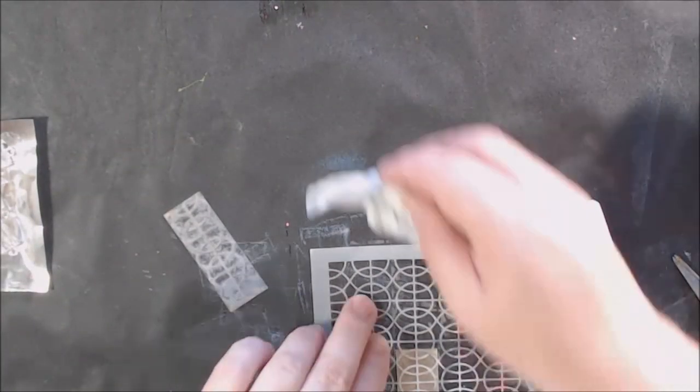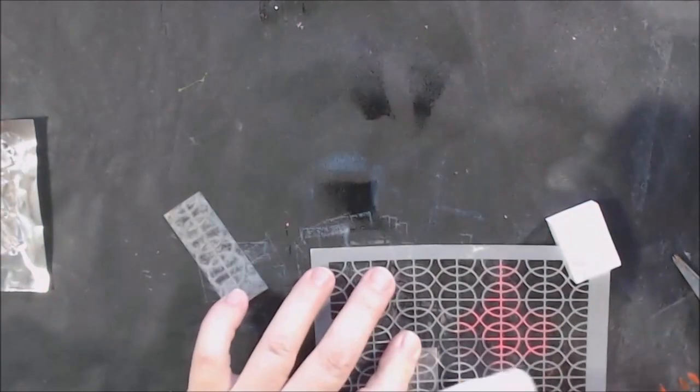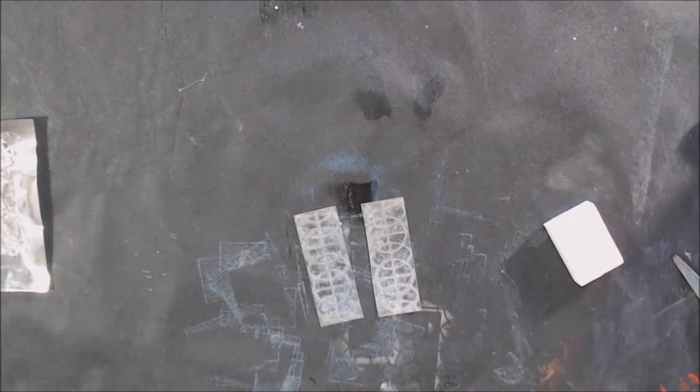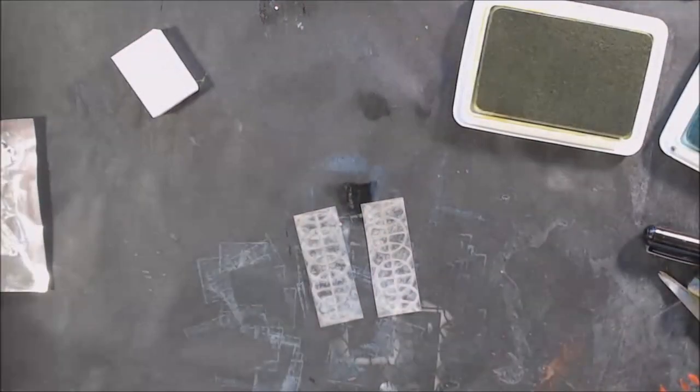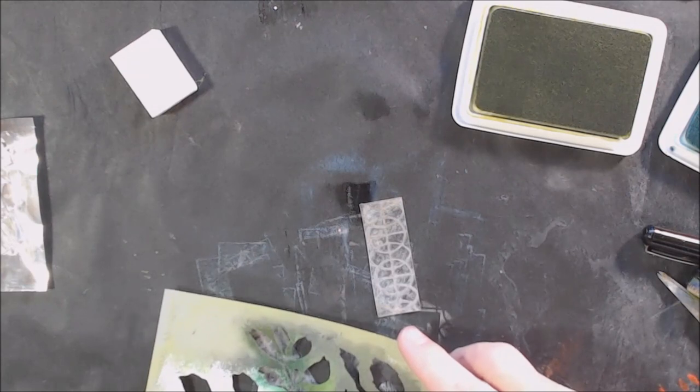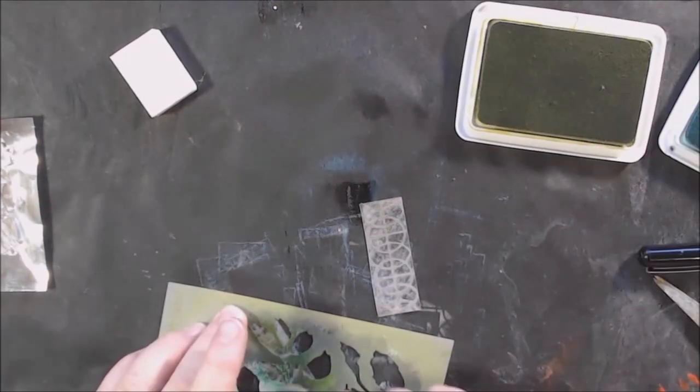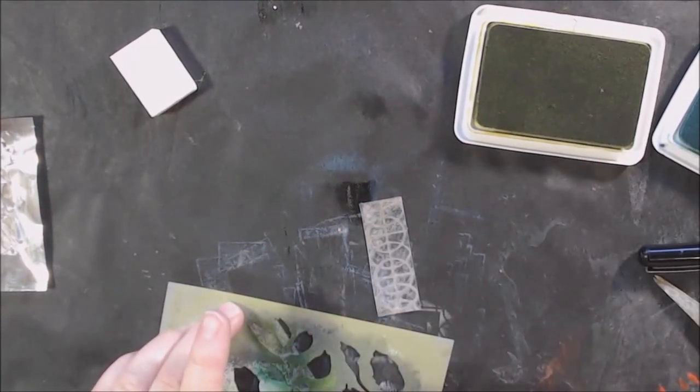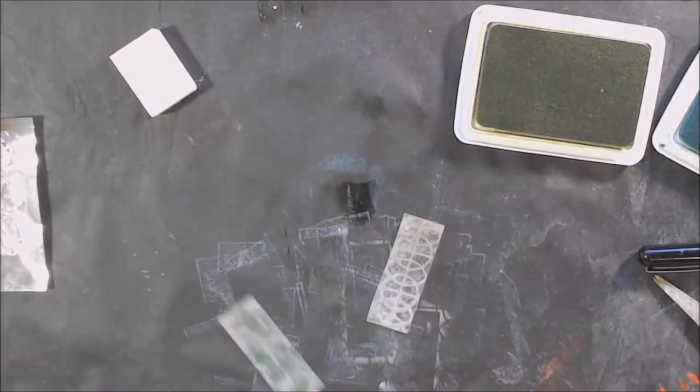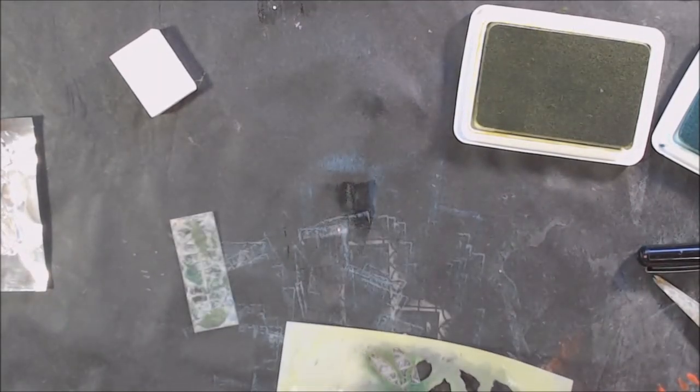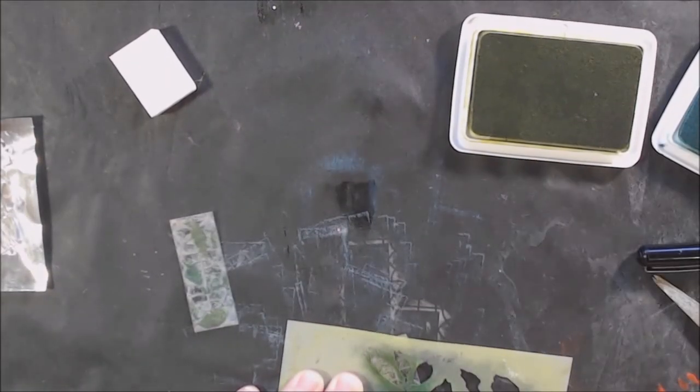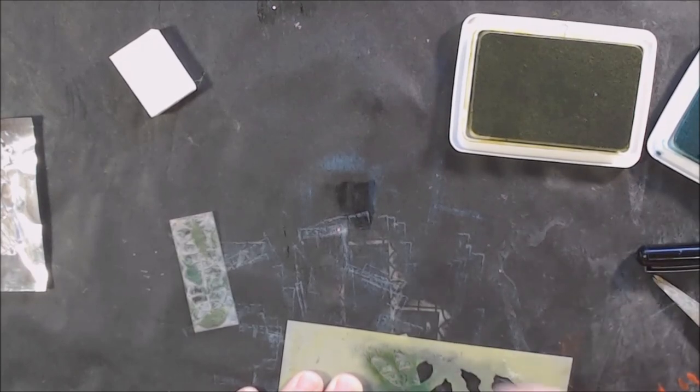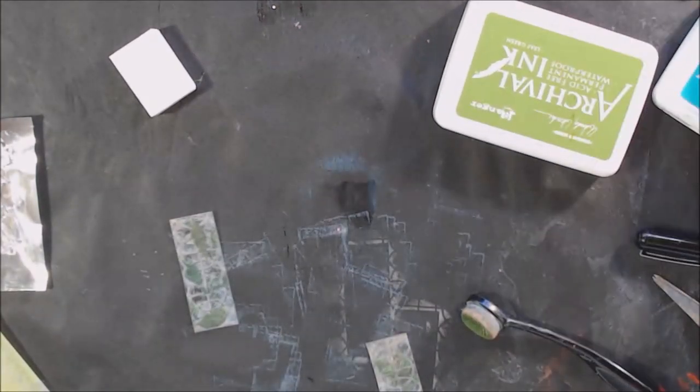And then I use a baby wipe through a stencil and I wipe off so that I end up with just the design on there, the design of the stencil on there, and then anything that's clear in the background will show the silver from the back coming out. And then I decide to use this botanical stencil which I love from stencil girl club. This was September club I believe.